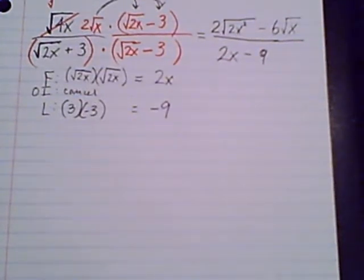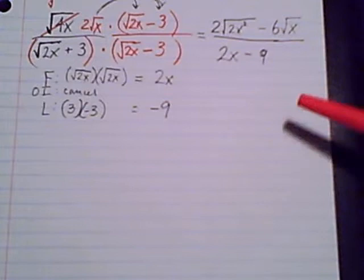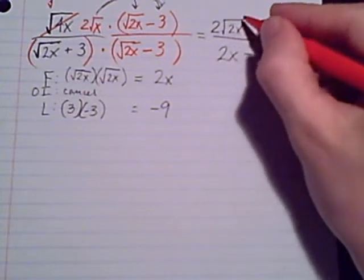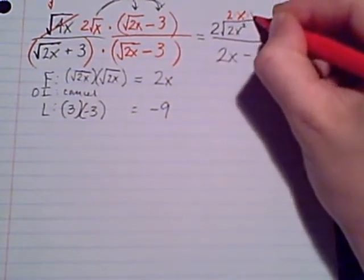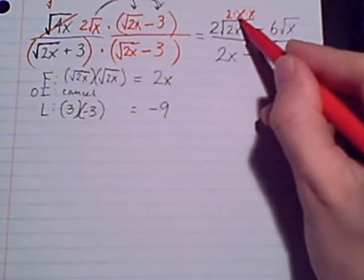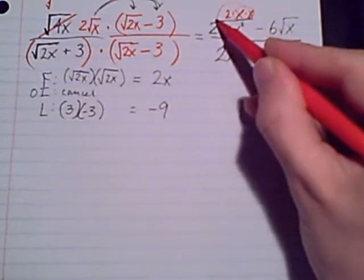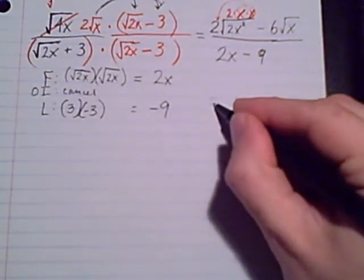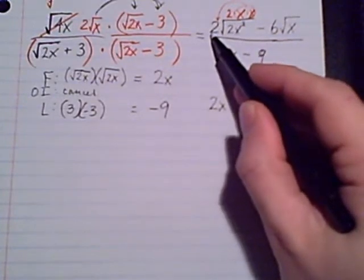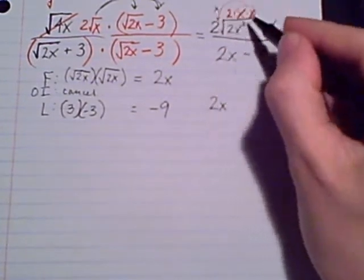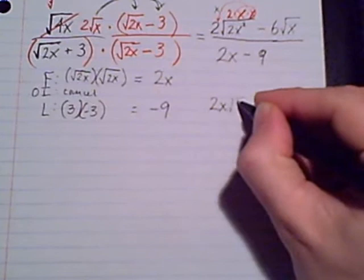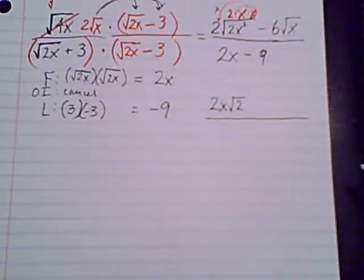Before I say this problem is finished, I want to make sure that the fraction is simplified, that all my radicals are simplified. So that 2x squared, there's some simplifying I can do with that radical. 2x squared. So there are a pair of x's there. I'm able to bring 1x out of the radical and multiply it to that 2. So the numerator now looks like 2x, okay, that 2 times the 1x that we brought out. We have, what do we have left over in the radical? Just 1, 2.